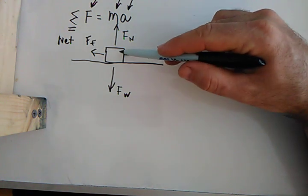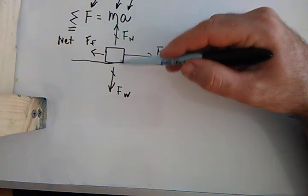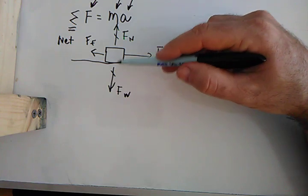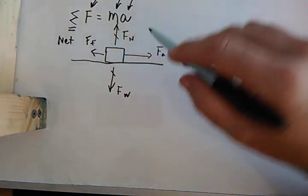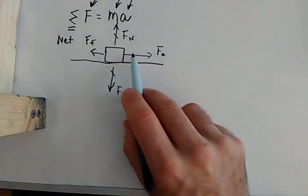Now, because the block is sitting on the table, we know that it's not accelerating in the up or down direction, it's actually staying put. But we know that the two forces we're going to have to look at are going to be the X forces.